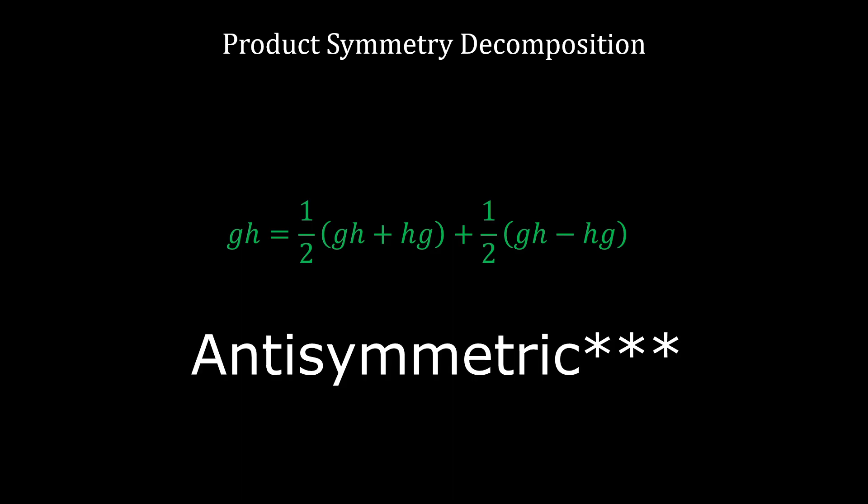And finally, let's take a look at the symmetry decomposition of a geometric number product. Just like any other geometric algebra, we can represent the geometric product as a sum of a symmetric part and a scalar part.